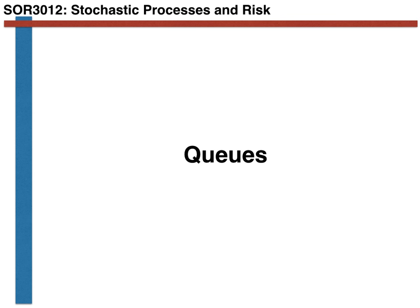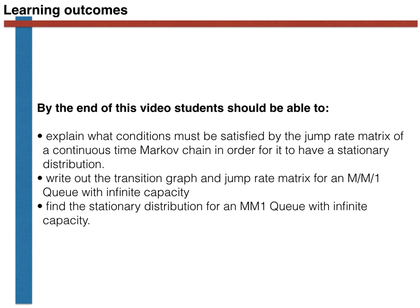With this in mind, our learning outcomes are to be able to explain what conditions must be satisfied by the jump rate matrix of a continuous time Markov chain in order for it to have a stationary distribution, to write out the transition graph and jump rate matrix for an MM1Q with infinite capacity, and to find the stationary distribution for an MM1Q with infinite capacity.